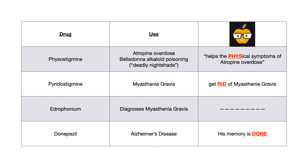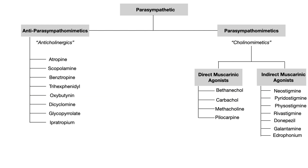Donepezil works because as an acetylcholinesterase inhibitor it increases the amount of acetylcholine, allowing more acetylcholine to agonize M1, M4, and M5 receptors in the central nervous system, creating pro-cognitive effects that help slow the cognitive decline in Alzheimer's. This summary chart is what you should take away regarding pharmacology in the parasympathetic subsection of the autonomic nervous system.